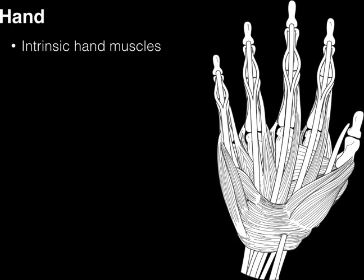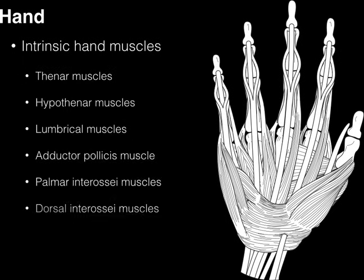Hand muscles — these are called the intrinsic hand muscles because these are muscles that originate and insert in the hand. There are a lot of tendons that go to the hand, like FDP, FDS, FPL, EDC, but these muscles originate in the forearm or even the arm in some cases, and then their long tendons go into the hand, so they have great power but not a lot of dexterity. Our intrinsic hand muscles don't have as much power — in fact, they fatigue easier — but they have a lot of dexterity, which is also why, if you remember the homunculus, so much somatotopic space has been dedicated to hand muscles in the pre-central gyrus.